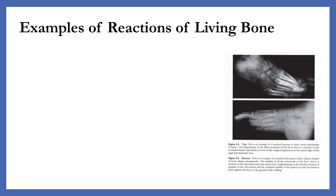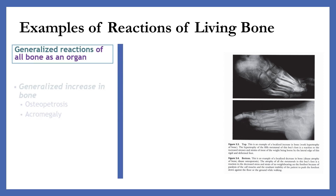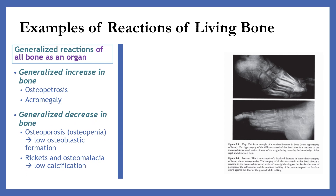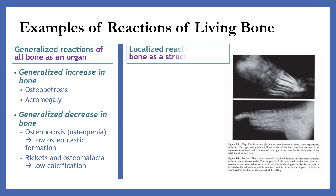Examples of reactions of living bone. There are two types of reactions. The first is generalized reactions of all bones as an organ: generalized increase in bone, such as in osteopetrosis or acromegaly, and generalized decrease in bone, such as in osteoporosis or osteopenia, with low osteoblastic formation, and in rickets and osteomalacia, which involves low calcification of bone.